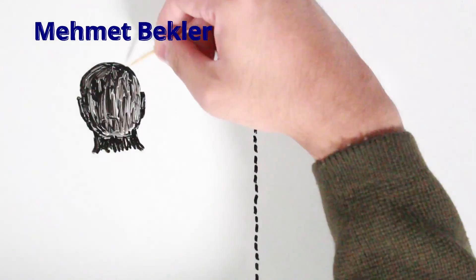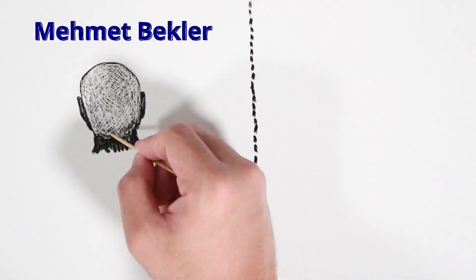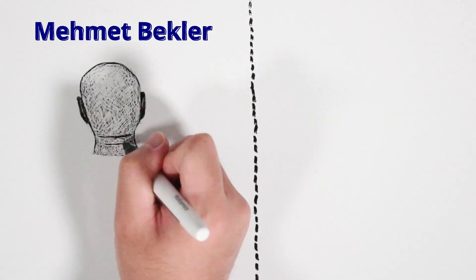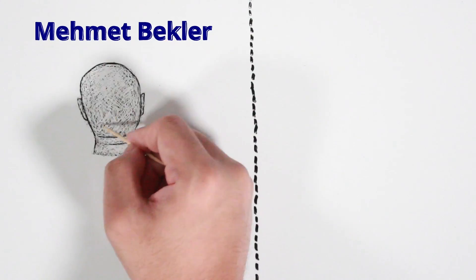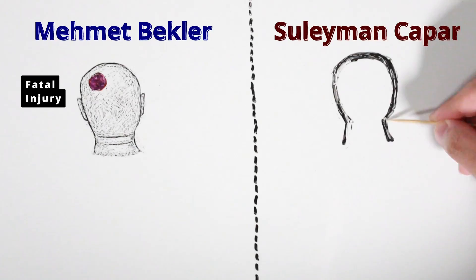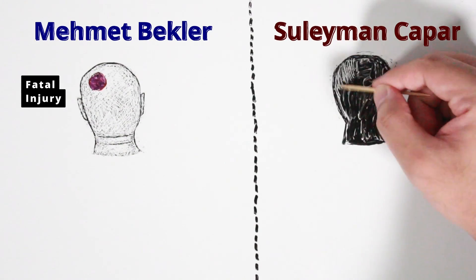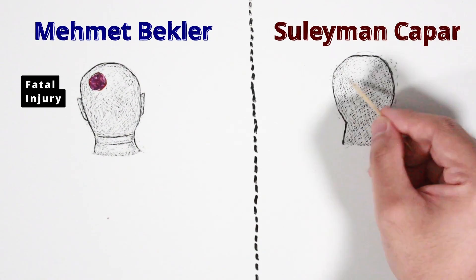Fascinatingly, Mehmet Bekler was hit on the top left side of his skull. This is what killed him. Similarly, Suleyman Chapar was born with a birth defect on the top left side of his skull. His skull was depressed. In other words, it appears pushed inward.